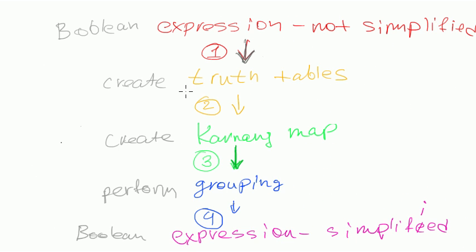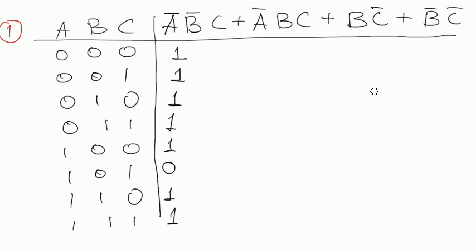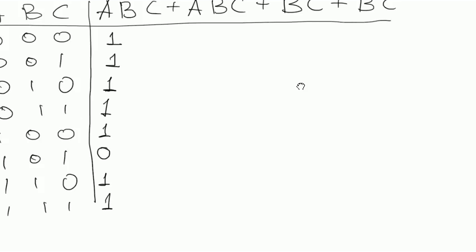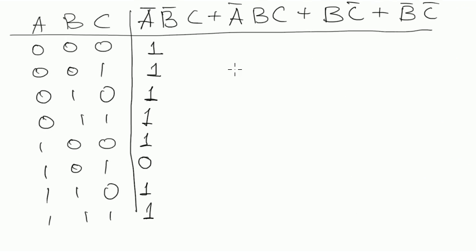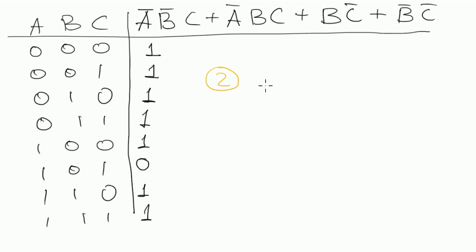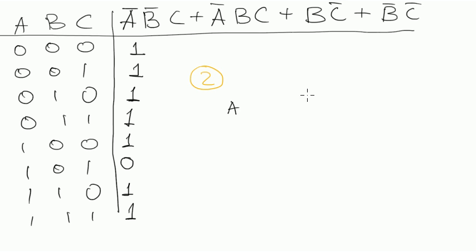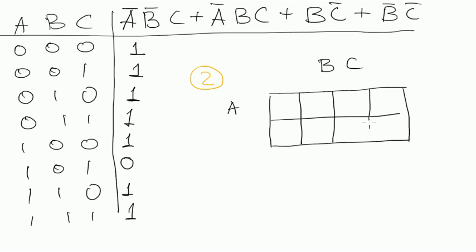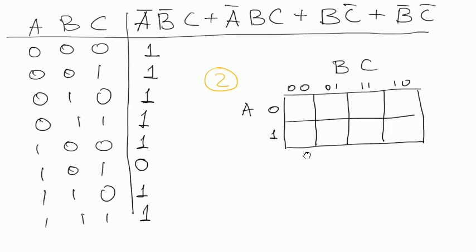And next step will be converting truth table into Karnaugh map. So it's step number 2. This is yellow. Step number 2. And I will turn off map right here. So we have three variables. So it will be A here and B here. And the cases will be 0 0, 0 1, 1 1, 1 0 and 0 1 for A.